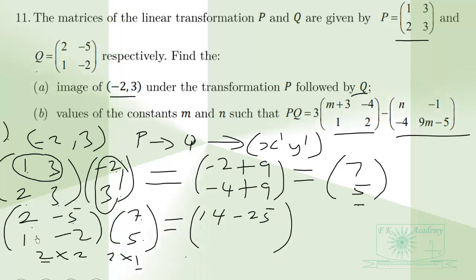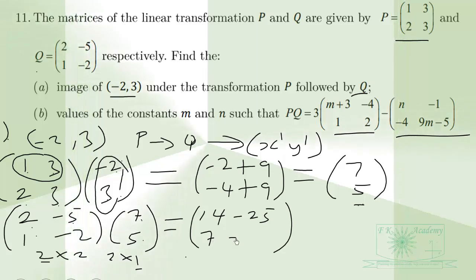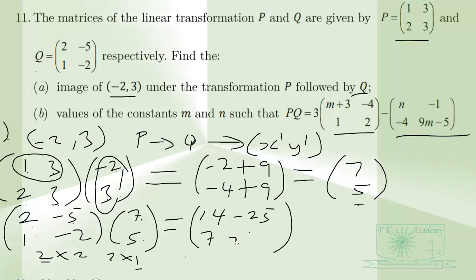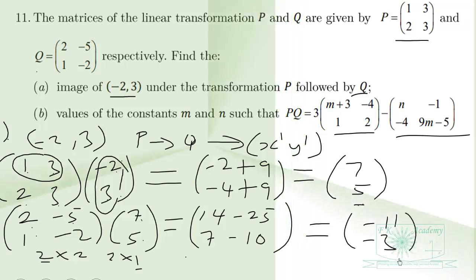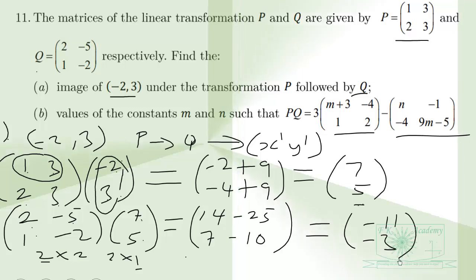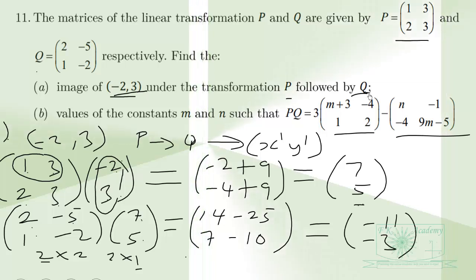Then 1 times 7 is 7, and -2 times 5 is -10. So the first entry is 14 minus 25, which gives -11. The second entry is 7 minus 10, which gives -3. So when we transform the point (-2, 3) under the transformation P followed by Q, the result is (-11, -3).